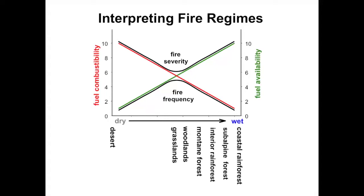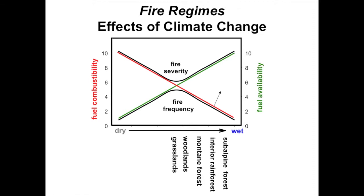Adding ecosystems along this gradient — from deserts at the driest end to coastal rainforests at the wet end — we see grasslands having the highest fire frequency, moving up a gradient like a mountainside through woodlands, montane forests, interior rainforests in British Columbia, and subalpine forests. Boreal forests fit somewhere in this transition where wetter conditions produce longer intervals and severe stand-replacing fires when they do occur, with mixed fire effects as well. From this fire regime framework, we can think about how cumulative landscape impacts influence these regimes — particularly changes due to climate and mountain pine beetle.